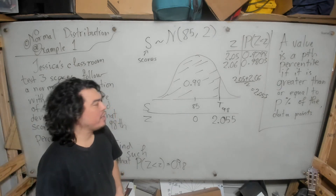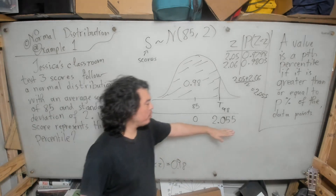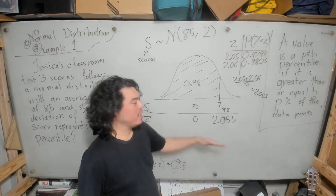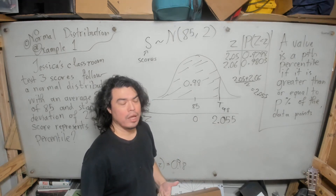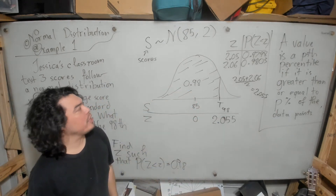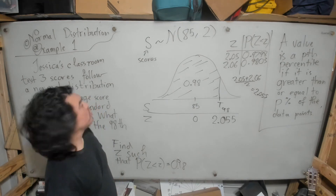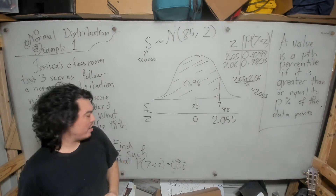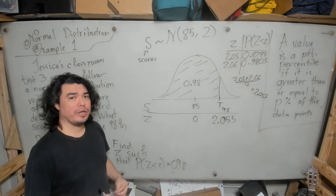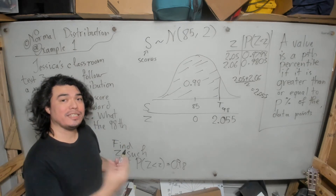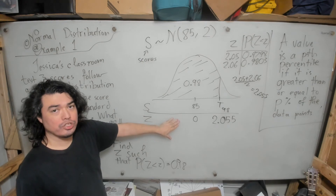Now you might be thinking: that's great, but how does knowing that 2.055 is the 98th percentile of the standard normal help us? It doesn't directly tell us anything about our particular distribution dealing with the test scores in Jessica's classroom. But here's where we exploit the relationship we've been using: when dealing with normal random variables, we use the z-score to take a value from some normal distribution and map it onto the standard normal to calculate probabilities.